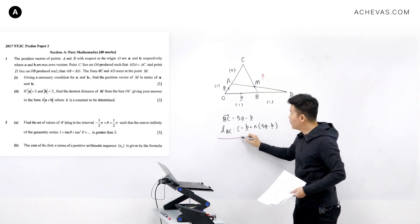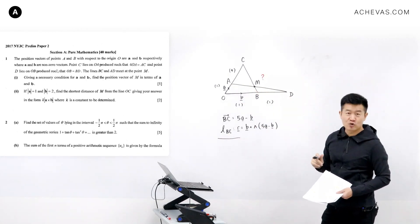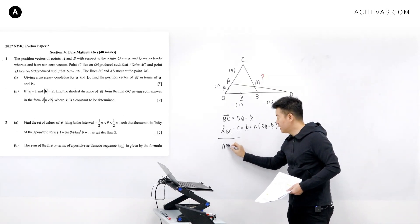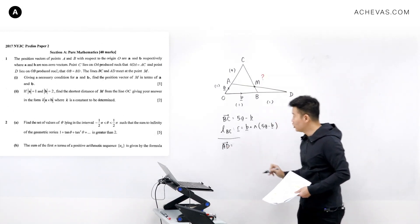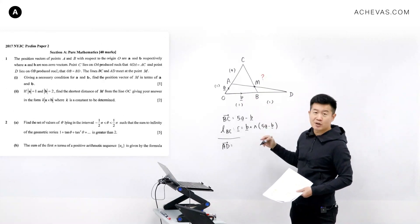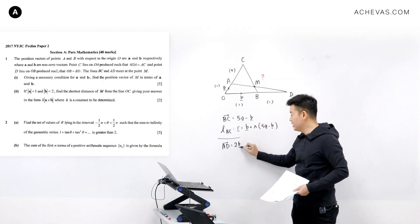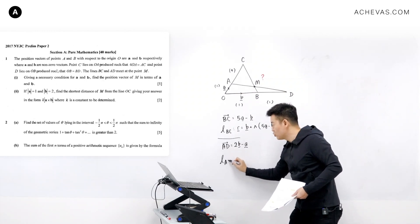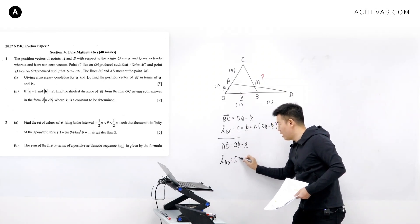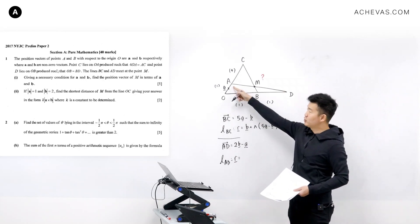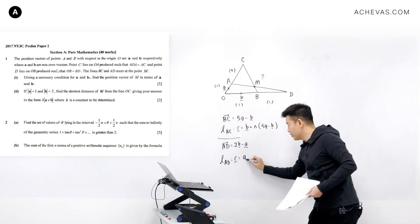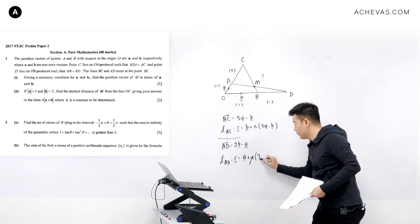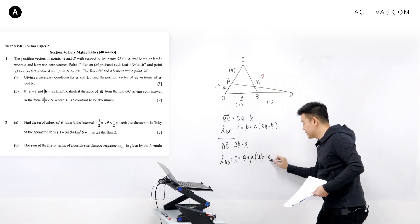And we're going to form the equation of another line that passes through AD. Let's find first the vector AD which is going to be OD. OD is 2 times of OB, so it's 2b minus OA. So the equation of the line that passes through AD is going to be r is equal to, it passes through the point a, so it will be a plus mu of 2b minus a.